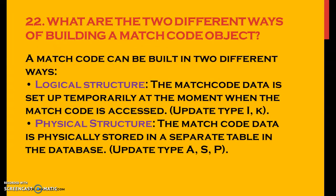What are the two different ways of building a match code object? A match code can be built in two different ways: logical structure and physical structure. In a logical structure, the match code data is set up temporarily at the moment when the match code is accessed — update type I and K. In a physical structure, the match code data is physically stored in a separate table in the database — update type A, S, or P.